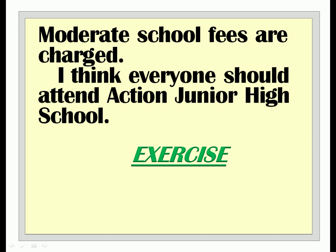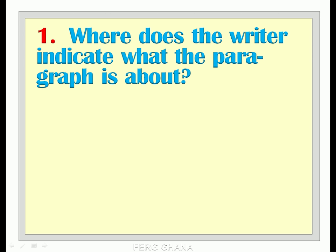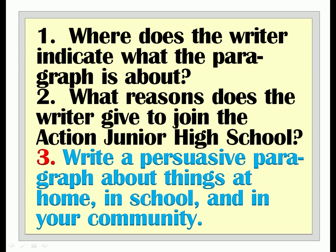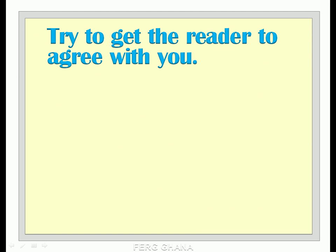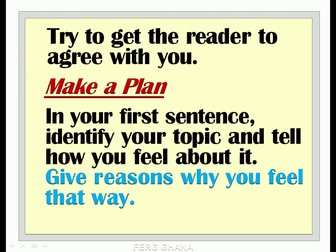Exercise. Answer the following questions about the model. 1. Where does the writer indicate what the paragraph is about? 2. What reasons does the writer give to join Action Junior High School? 3. Write a persuasive paragraph about things at home, in school, and in your community. Try to get the reader to agree with you. Make a plan: in your first sentence, identify your topic and tell how you feel about it. Give reasons why you feel that way.